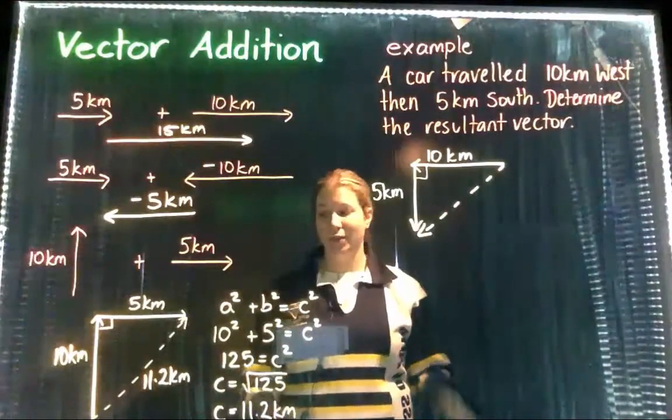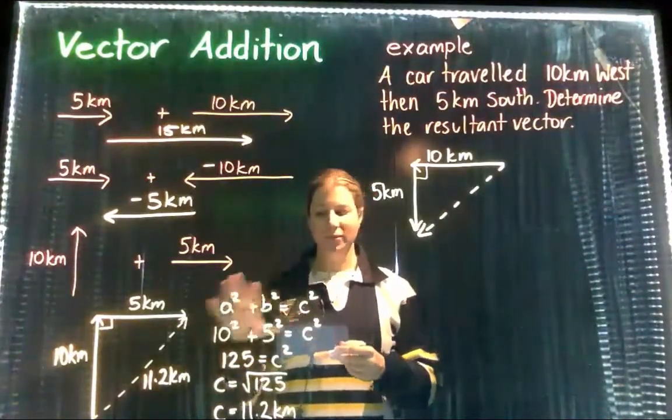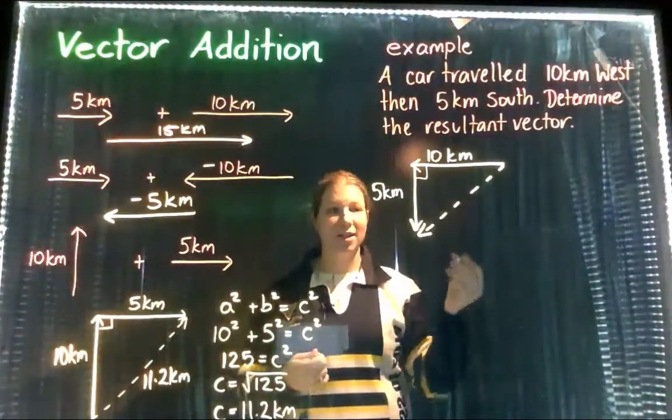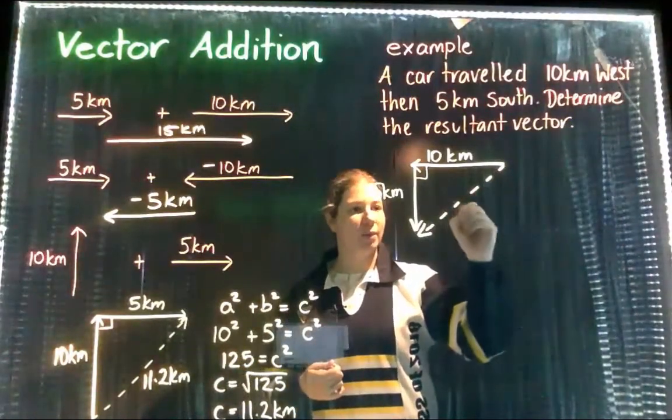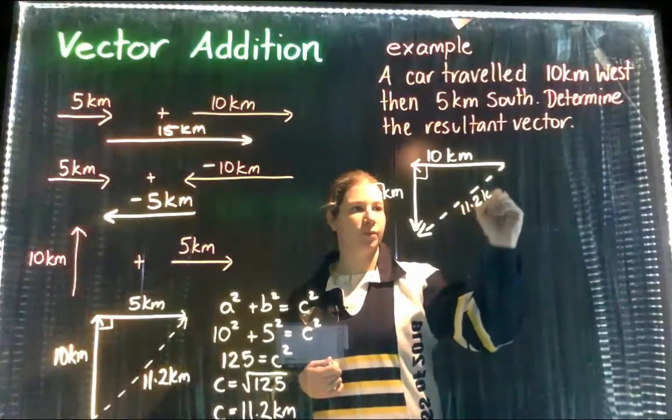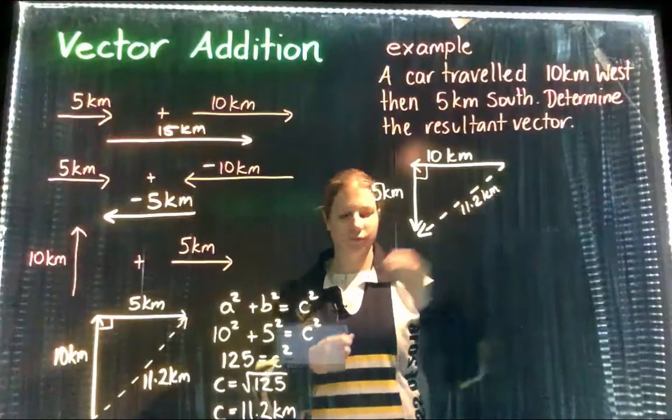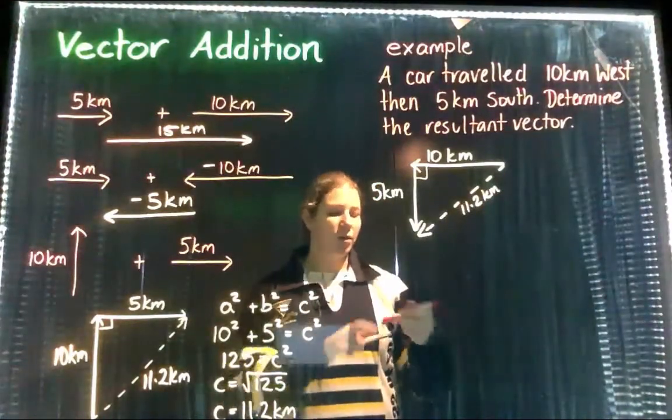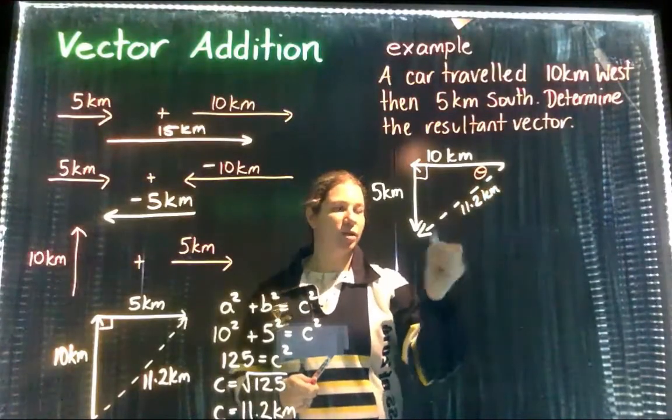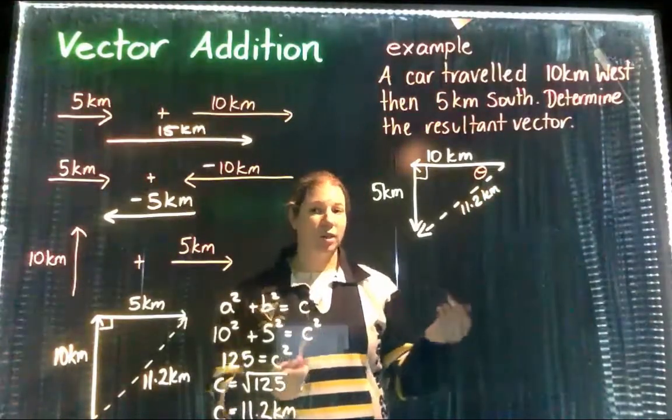Because this is very similar to the example that we did before, again using the exact same Pythagoras, we would actually end up with the same answer here. This magnitude of the resultant vector would be 11.2. And the angle that we're trying to find is going to be this one, it's giving us the direction, so again using our SOH CAH TOA.